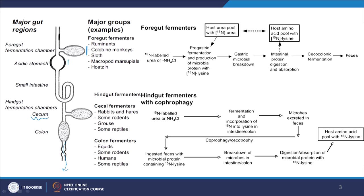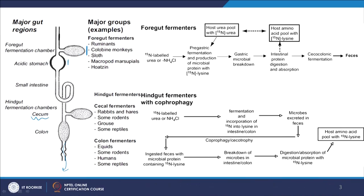They have basically two fermentation chambers: one is the foregut fermentation chamber and the other is the hindgut fermentation chamber. The big refractory components of food that are degraded in the rumen will either ferment in the foregut or hindgut fermentation chamber. We have two types of ruminants: foregut fermenters, which ferment mostly in their foregut — examples include most ruminants, monkeys, sloths, marsupials such as kangaroo, and hoatzin — and hindgut fermenters, which ferment mostly in their hindgut, either in the cecum or colon.